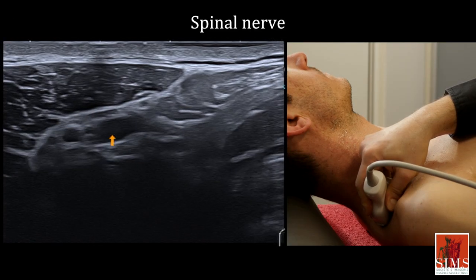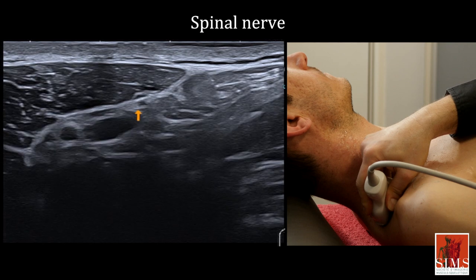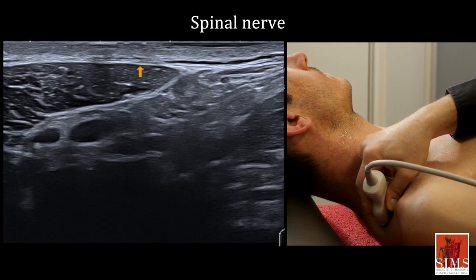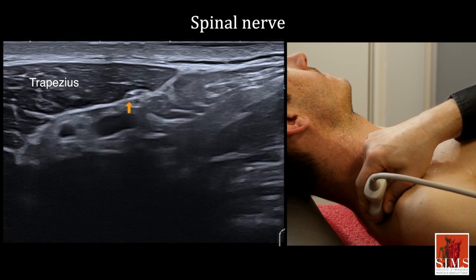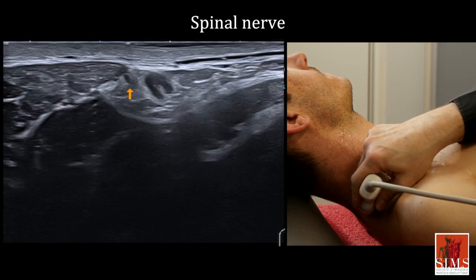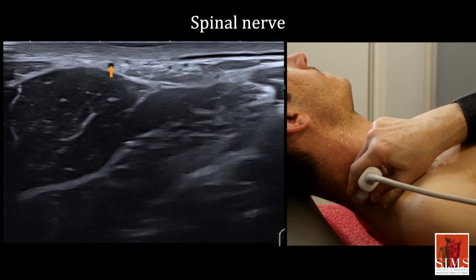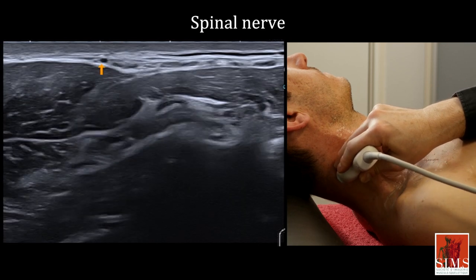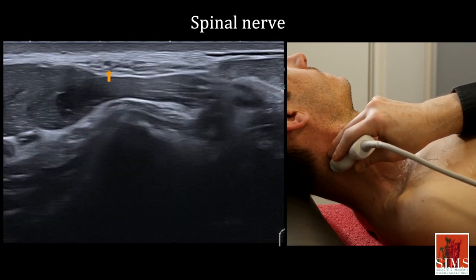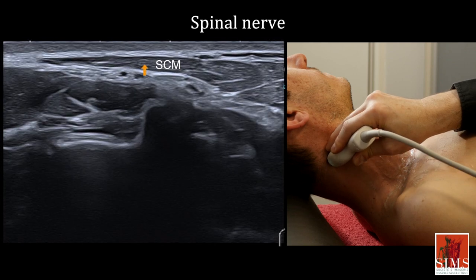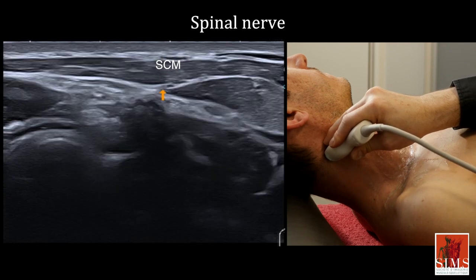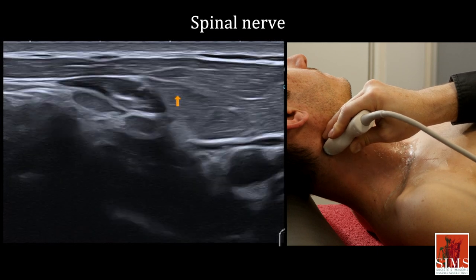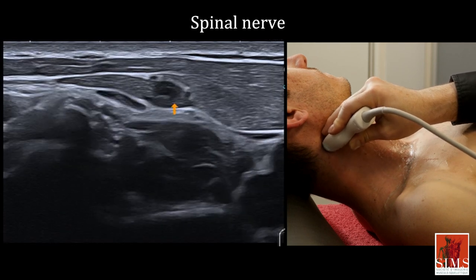The accessory spinal nerve can be easily located at the distal end, deep in the anterior part of the trapezius. It is a small rounded structure that becomes very superficial as we get closer to the sternocleidomastoid muscle. It penetrates this sternocleidomastoid muscle to innervate it, and here it is deep in the muscle.